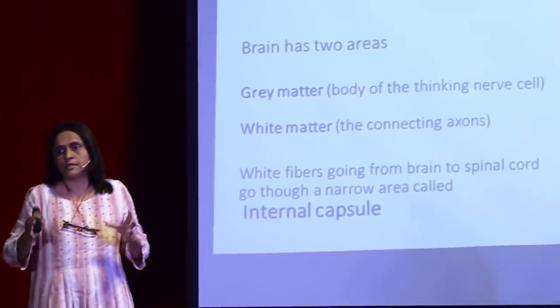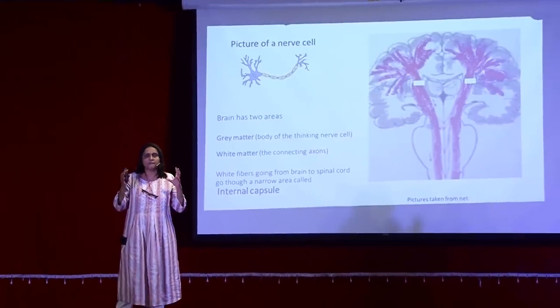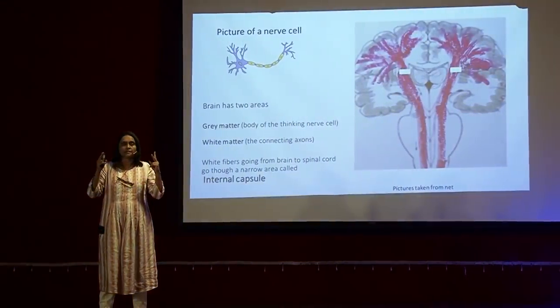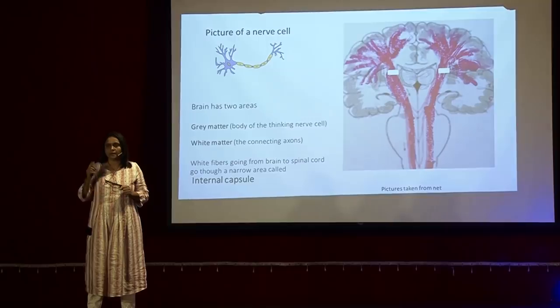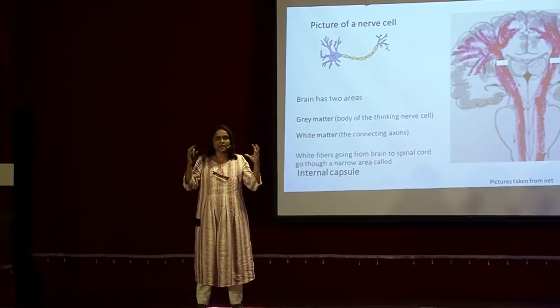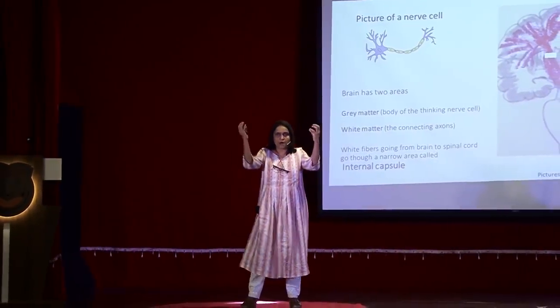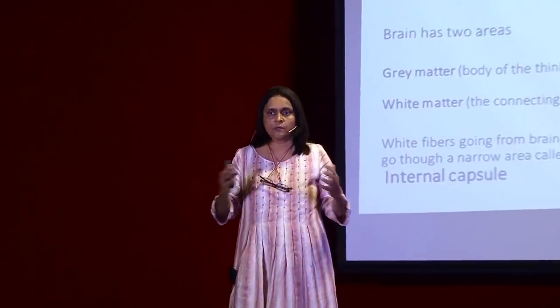Just for the sake of the audience, I would like to explain two aspects of the brain. Our brain is made up of two matters: grey matter and white matter. The nerve cell — the thinking nerve cell — is your grey matter, and all the connections, the cables, which come out of those nerve cells and communicate with each other, is your white matter. Those are the axons. So, you have grey matter, the computer which is thinking for you, and you have the cables or the connections which keep sending signals to the rest of the body.